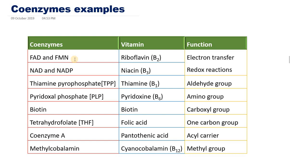Coenzymes that help in transfer of electrons are FAD and FMN — flavin adenine dinucleotide and flavin mononucleotide — both derived from vitamin B2 or riboflavin. Another water-soluble vitamin, B3 or niacin, has coenzymes NAD and NADP — nicotinamide adenine dinucleotide and nicotinamide adenine dinucleotide phosphate. Both riboflavin and niacin coenzymes are category 1 coenzymes, meaning they help in transfer or accepting electrons from the substrate.